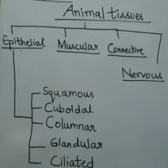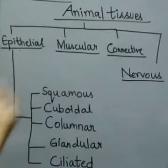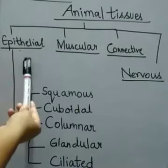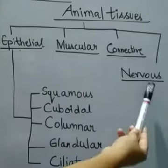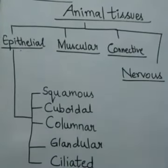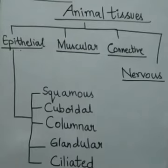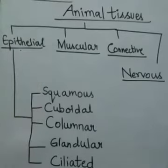On the basis of the functions they perform in the body of multicellular animals, animal tissues are classified as epithelial tissue, muscular tissue, connective tissue, and nervous tissue. Epithelial tissue is the simplest tissue. It is the protective tissue of the animal body and covers most organs and cavities within the body.